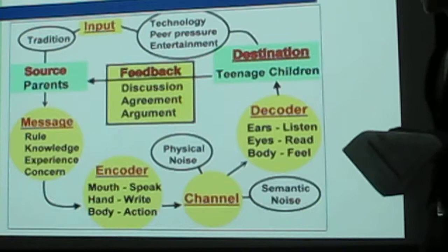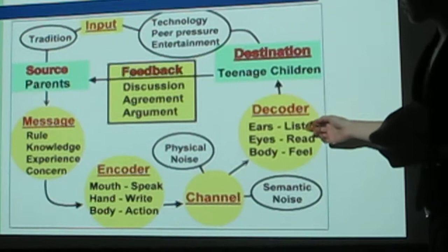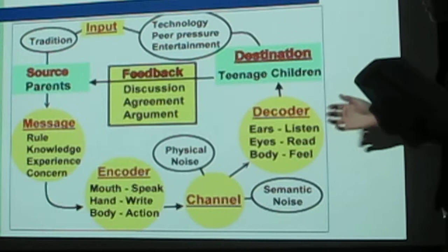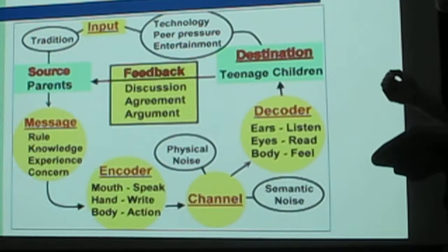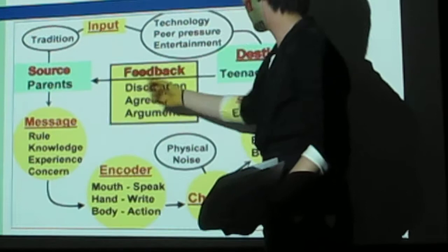Then we will decode. This includes the ears, so children can listen. And eyes can read the letter. And body can feel what their parents want to let them know. So the teenage children will receive this message. Then children will give feedback to the parent.